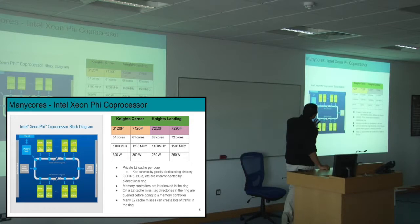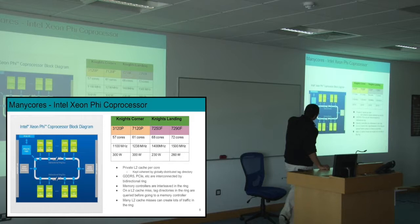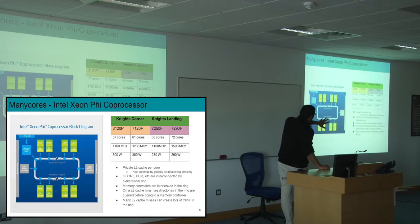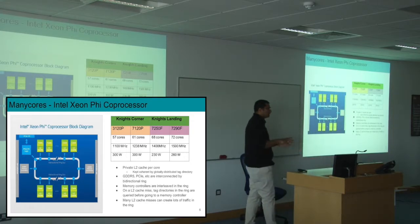As you can see in the picture, there is no last-level cache. The L2 cache is actually private per core, but it's kept coherent by a globally distributed tag directory. Most elements — like the memory controllers — are interconnected by a ring, and this globally distributed tag directory is distributed along the ring. This ring is actually the bottleneck here, instead of the last-level cache shown in the previous picture.